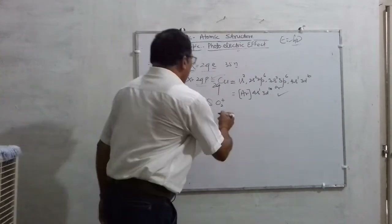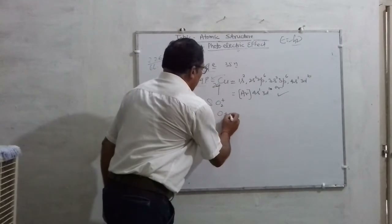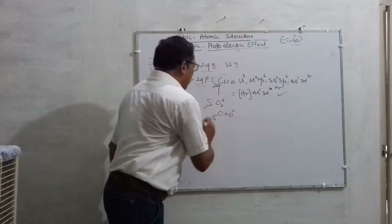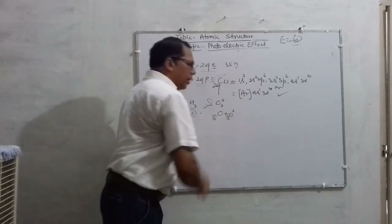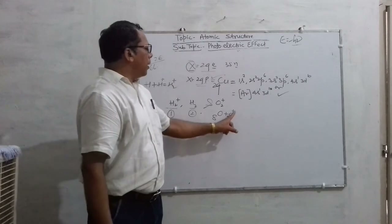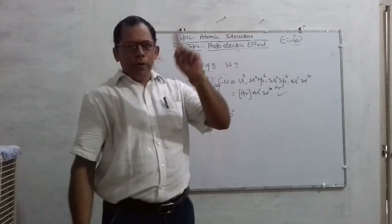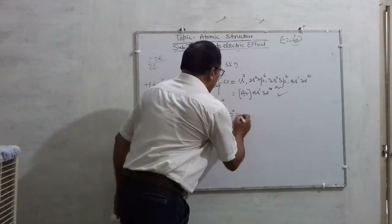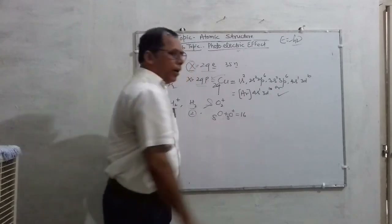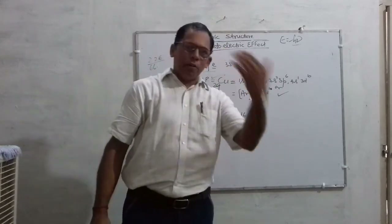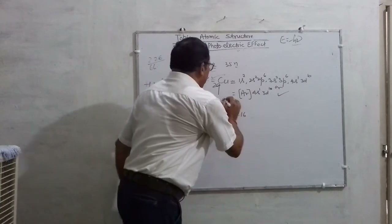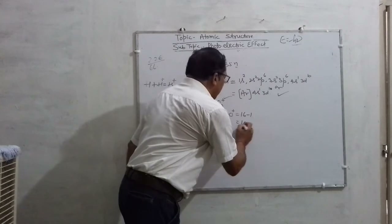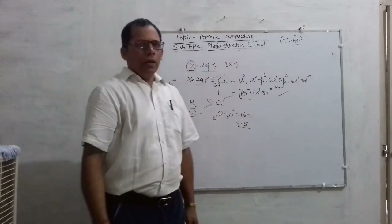For O₂⁺: one oxygen has eight electrons and the other oxygen also has eight electrons — total sixteen. But this plus sign shows that one electron has been lost. So the total number of electrons in O₂⁺ becomes fifteen.